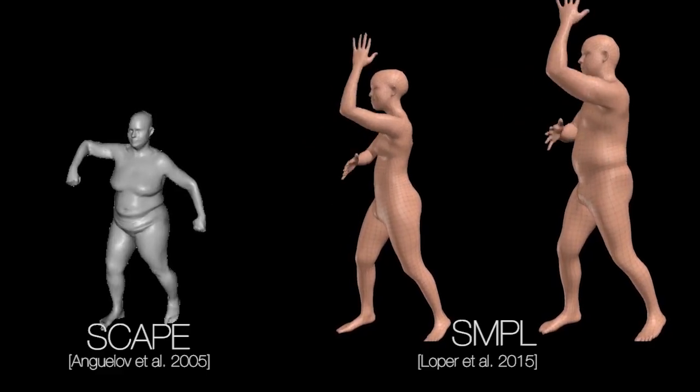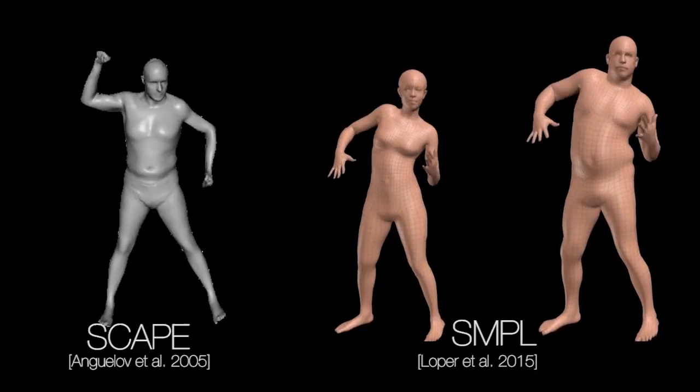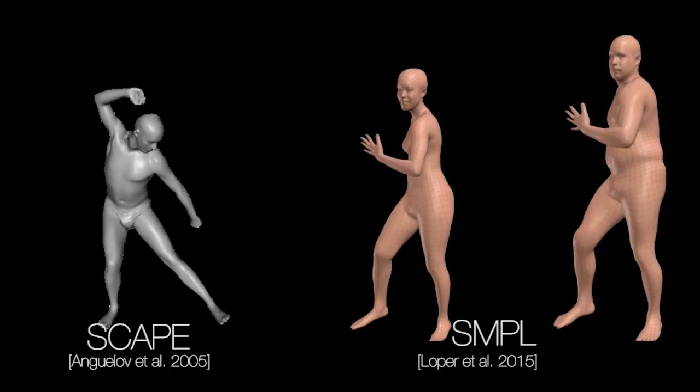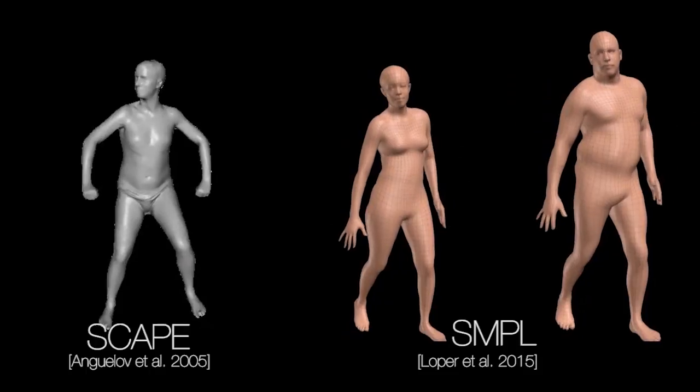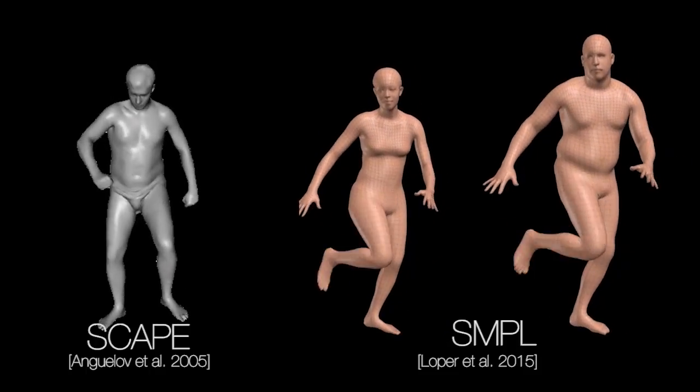Yet that is typically how they're studied and modeled in computer vision and graphics. Recent learned models of 3D human body shape and pose ignore the hands. Hands are represented as either closed in fists or open and flat.